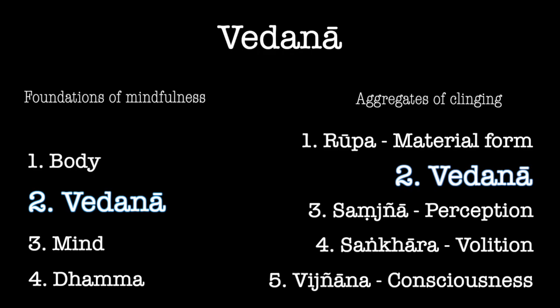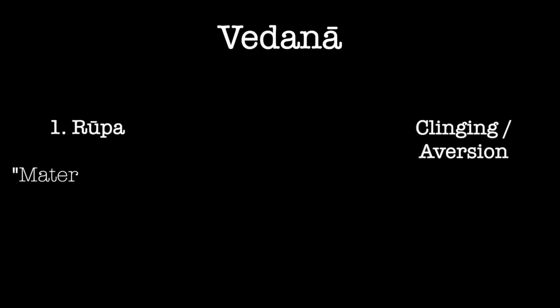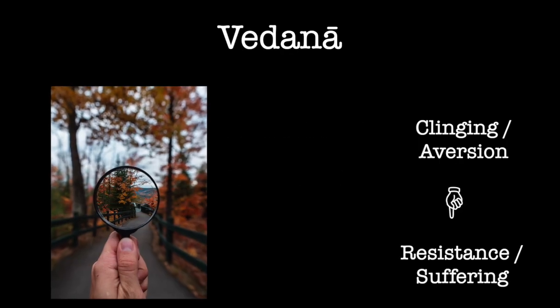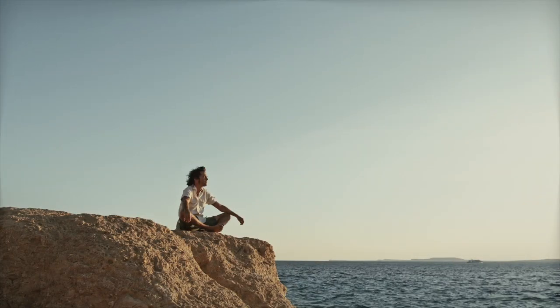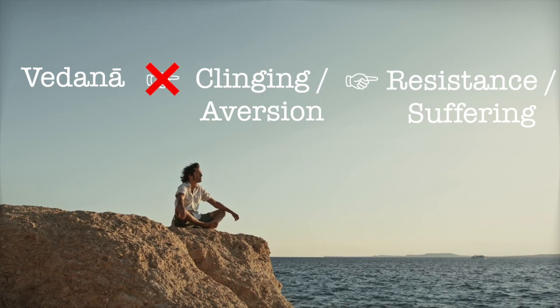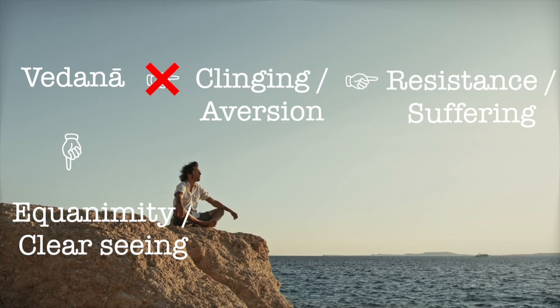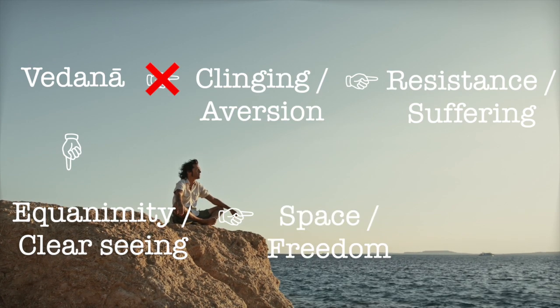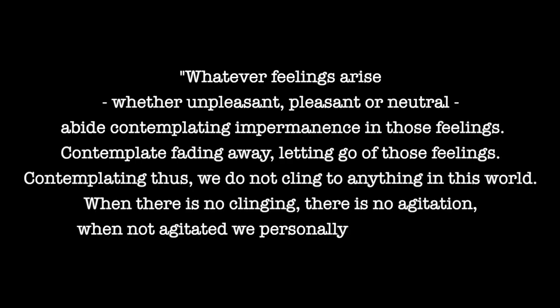Vedana is singled out as the second foundation of mindfulness as well as the second aggregate because it provides fertile ground for clinging and aversion — it's a key link in the chain of suffering, which makes it worth paying attention to. Through the practice of mindfulness and the cultivation of equanimity, we can cut the chain at this level. We begin to see feelings for what they are, and we can allow their changing nature without putting up a fight. When there's no resistance, no clinging, we find space and freedom. The Buddha said: 'Whatever feelings arise, whether unpleasant, pleasant, or neutral, abide contemplating impermanence in those feelings, contemplate fading away, letting go of those feelings. Contemplating thus, we don't cling to anything in this world. When there's no clinging, there's no agitation. When not agitated, we personally attain nirvana.'